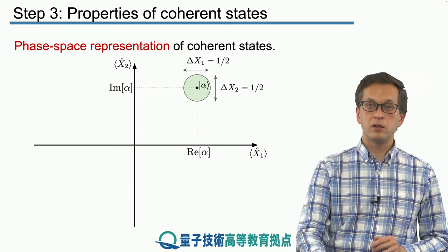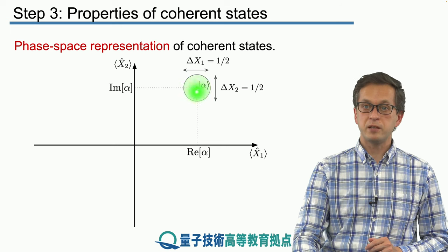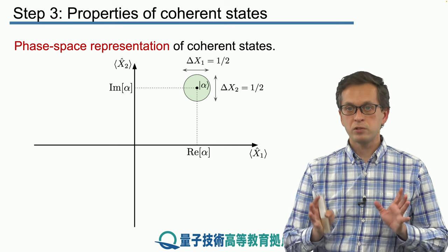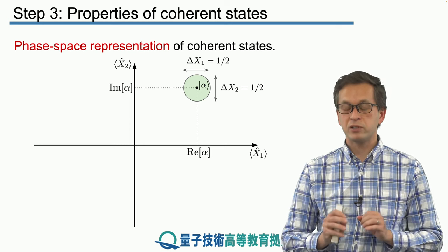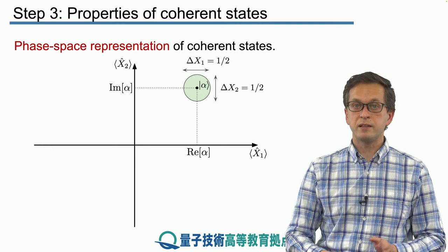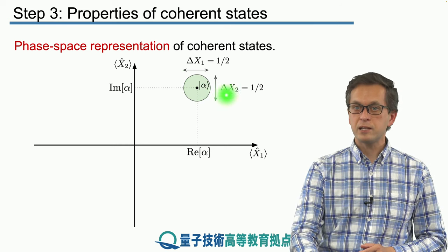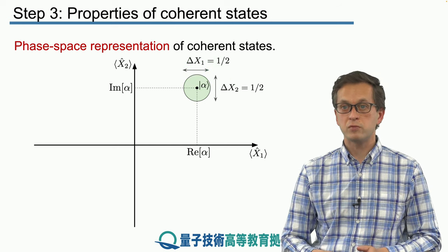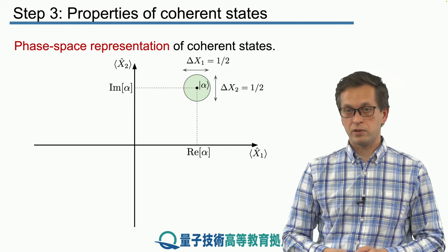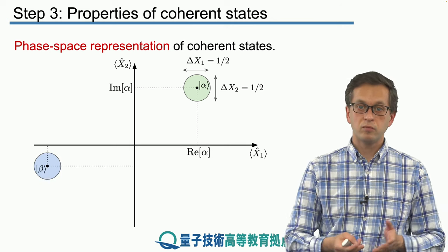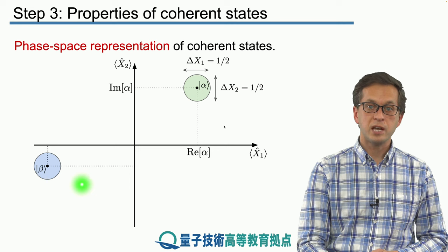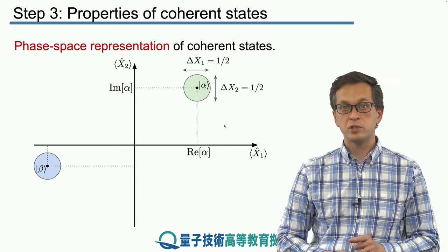Let's say we pick a coherent state alpha — it is represented by a point with coordinates given by the real part and imaginary part of alpha. But we also want to remind ourselves that coherent states have fluctuations associated with them, so the values of x1 and x2 are never sharp. We represent this by a circle, whose size corresponds to the fluctuations delta x1 = one half and delta x2 = one half. A different coherent state beta is plotted at the real and imaginary parts of beta, again with the same circle representing its fluctuations in position and momentum quadratures.